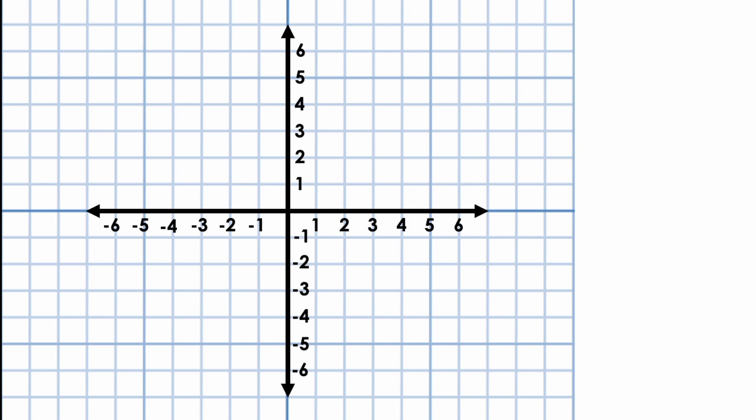On the coordinate plane, the horizontal line is called the x-axis and the vertical line is called the y-axis. It's the two axes that make the coordinate plane two-dimensional. The x and y-axis always intersect at the point (0, 0). This point is called the origin. If you've ever played the game Battleship, you will be familiar with locating a point on the coordinate plane.